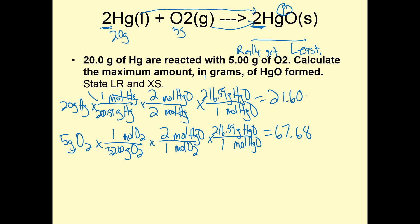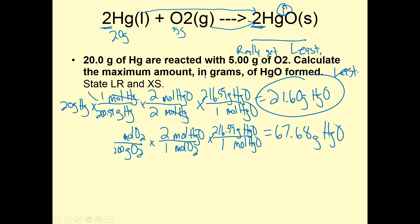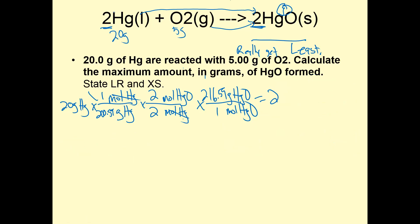Both answers are in grams of HgO: 21.60 and 67.68. The correct answer is 21.60 because it is the least. My limiting reactant is the reactant that gave me the least. So HgO is my limiting reactant, even though it was the bigger starting amount. HG is my limiting reactant, and O2 is my excess reactant.